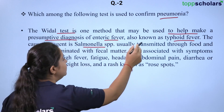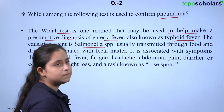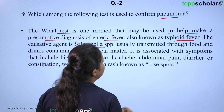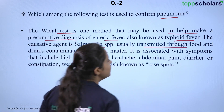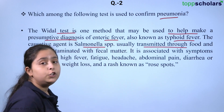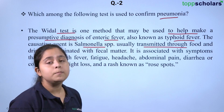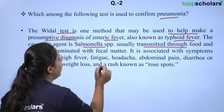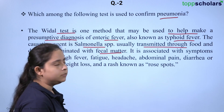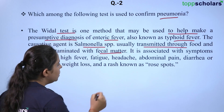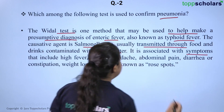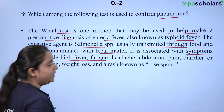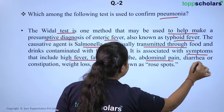You should also mark these details. The causative agent is Salmonella, which is usually transmitted through contaminated food or water, and these are contaminated with fecal matter. The symptoms might be high fever, fatigue, and abdominal pain, diarrhea.